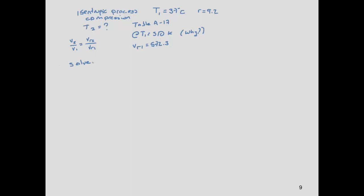We solve for V_r2. Since V2/V1 = 1/r (compression ratio), we have V_r2 = V_r1 / r = 572.3 / 9.2 = 62.2. This is very close to the table value of 62.13, so we can interpolate to find the exact T2.